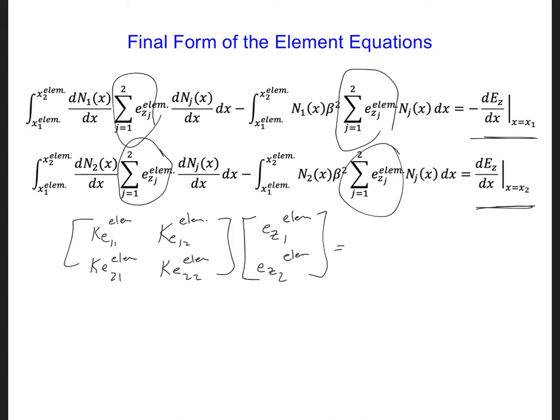And that's going to be equal to the right-hand side array, which just has these two terms in it. So I can just write minus dez dx at x equal x1 at the first node, and dez dx at the second node, x2.